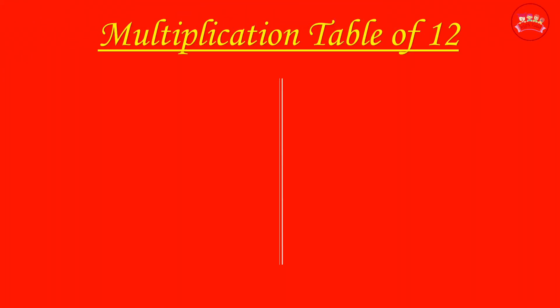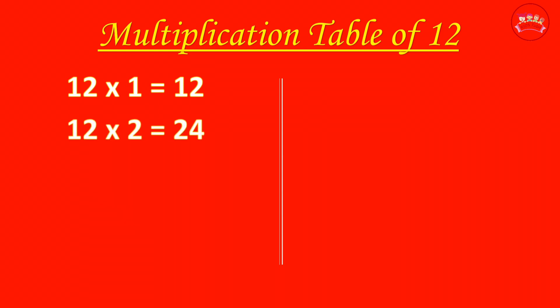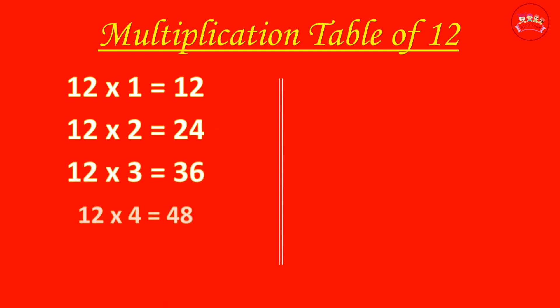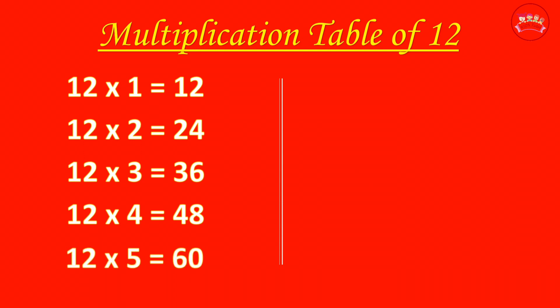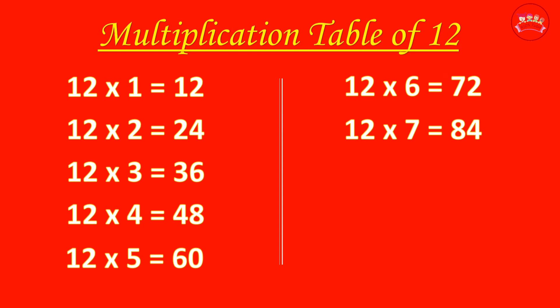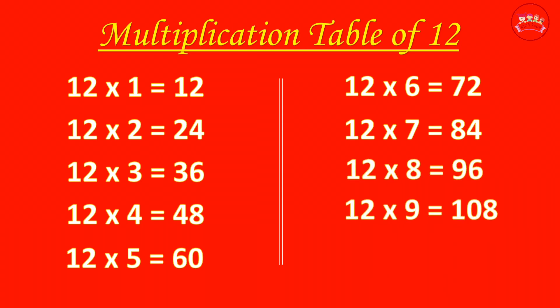Multiplication Table of 12. 12-1 is 12, 12-2 is 24, 12-3 is 36, 12-4 is 48, 12-5 is 60, 12-6 is 72, 12-7 is 84, 12-8 is 96, 12-9 is 108, 12-10 is 120.